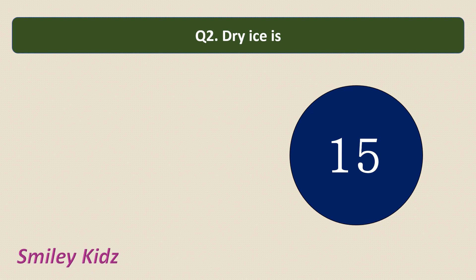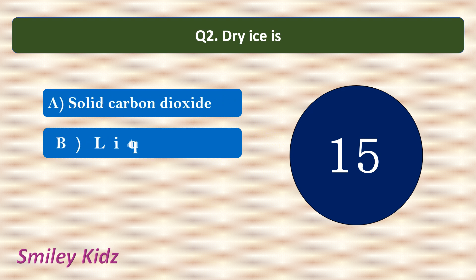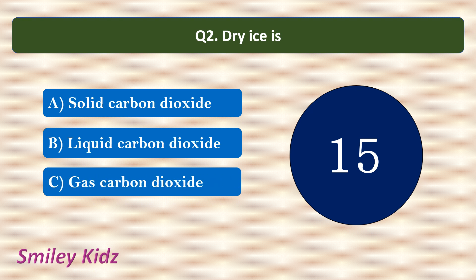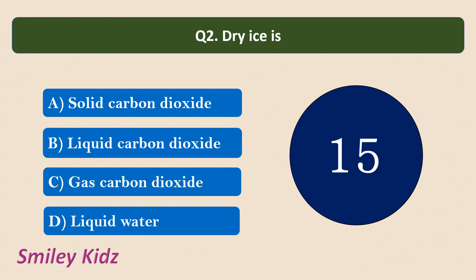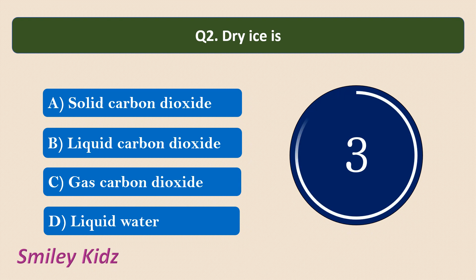Question number 2. Dry ice is? Options are: solid carbon dioxide, liquid carbon dioxide, gas carbon dioxide, or liquid water. The correct answer is solid carbon dioxide. Solid carbon dioxide is called dry ice. It is stored at very high pressure.